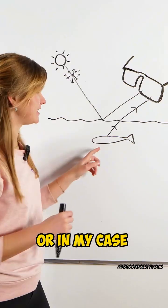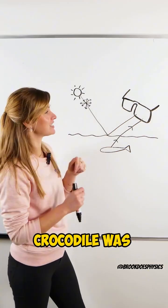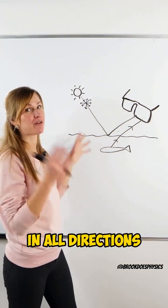The reason he could see the crocodile, or in my case a fish because I can't draw a crocodile, is that light from the sun is unpolarized. This means it vibrates or oscillates in all directions.